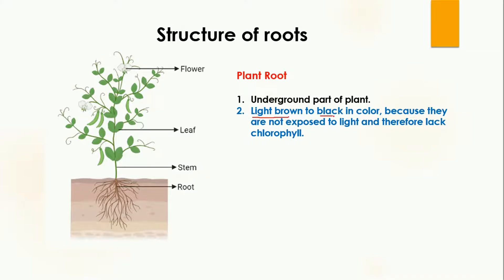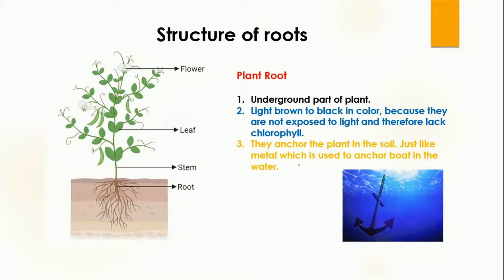The reason the color of roots is brown or black, and not green like the stem, is because they are not exposed to light and they lack chlorophyll. In other words, their function is not to prepare food, so they do not contain any chlorophyll. Because of the absence of chlorophyll, the color of the root is brown or black.